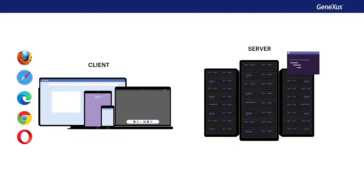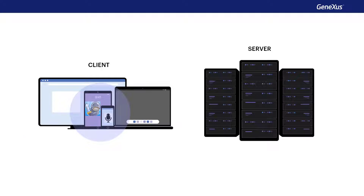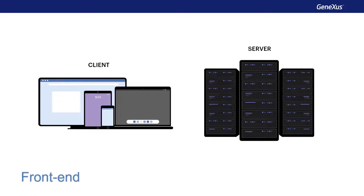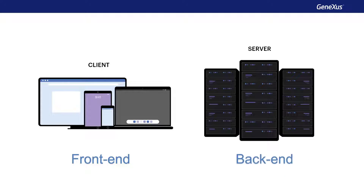For native applications, there's also software that runs on the mobile device locally — the client — and other software that runs on a server. The part of a digital application that runs on the client device is called the front end, and the part that runs on the server is called the back end. The entire application is comprised of these two parts, which interact with each other.